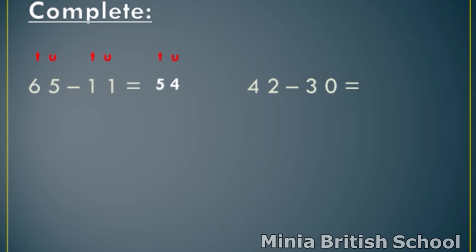Read: forty-two minus thirty. Write T and U above all the numbers and above the answer space. Start from units. Two minus zero — any number minus zero equals the same number. So, two minus zero equals two. Write two under units. And in tens, where is the smallest number? Three or four? Three. So, count after three: four. How many fingers? One. So, write one under tens. The answer is twelve.